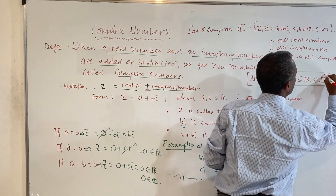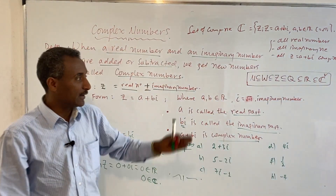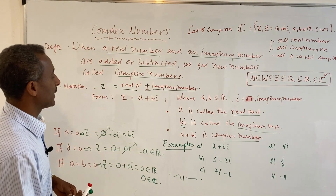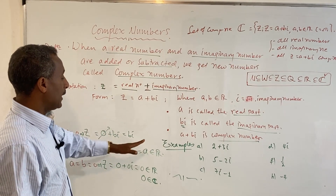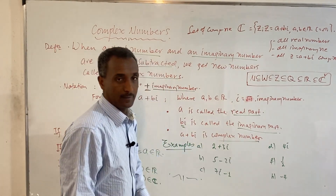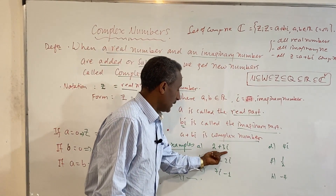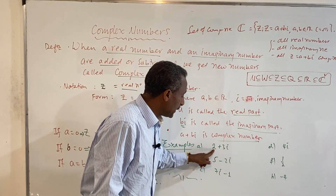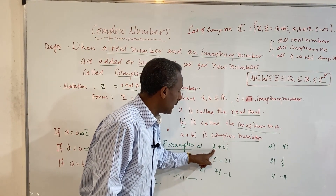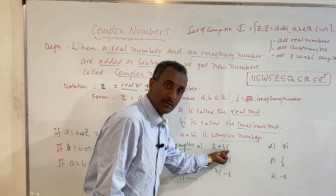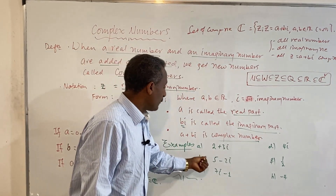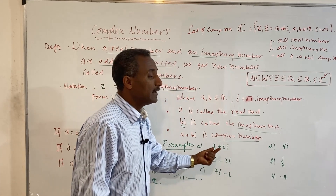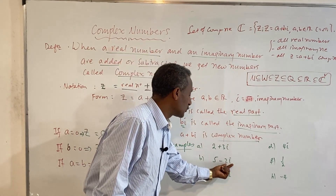Let's see some examples of complex numbers. The number 2 plus 3i is a complex number that has real part 2 and imaginary part 3i. The number 5 minus 2i has real part 5 and imaginary part minus 2i.